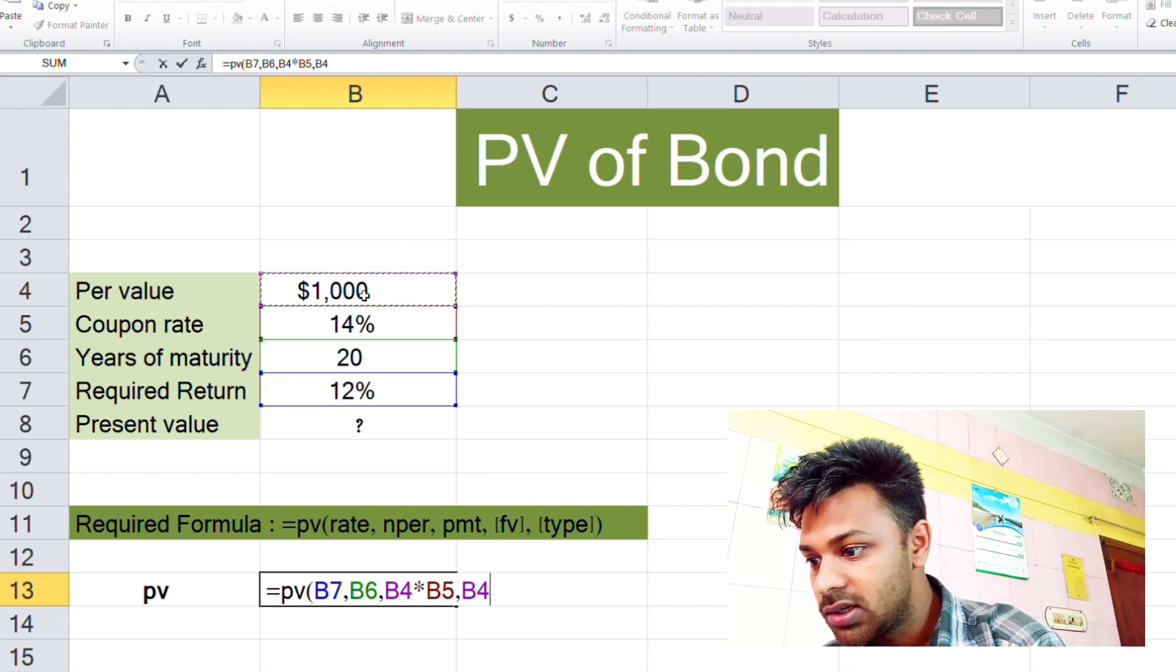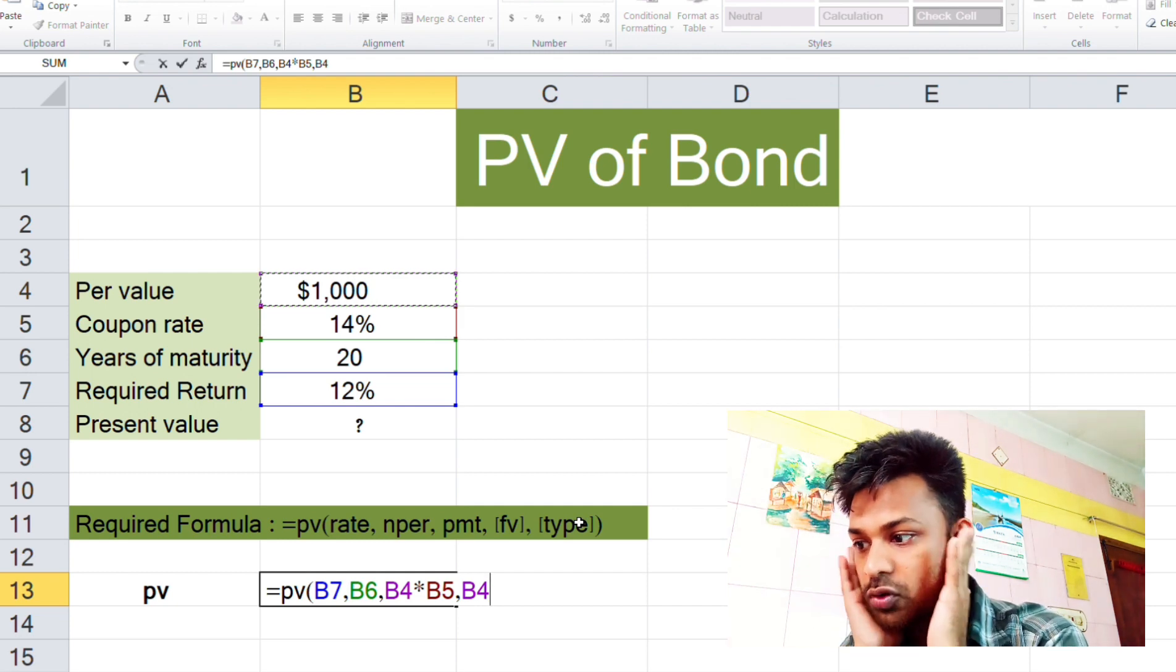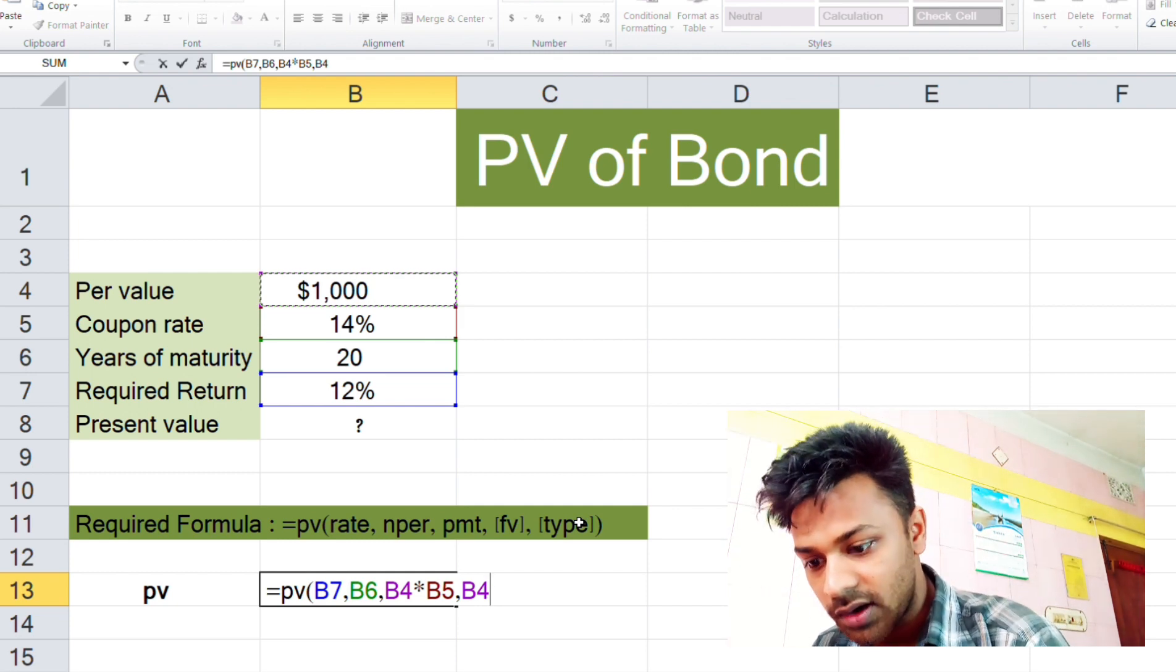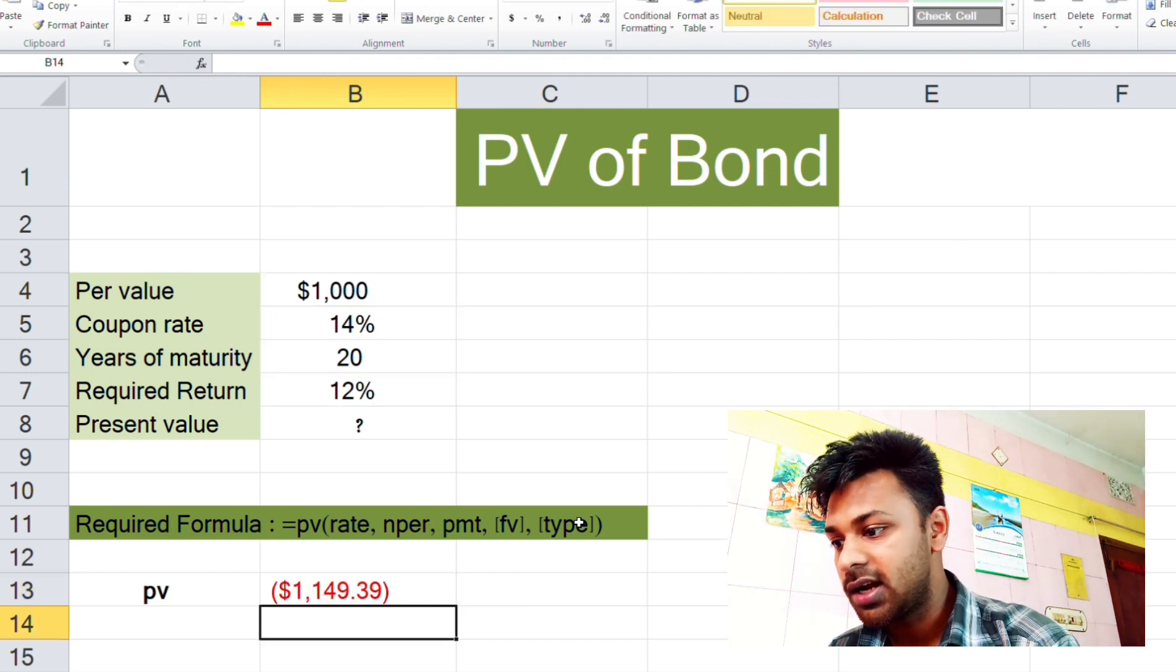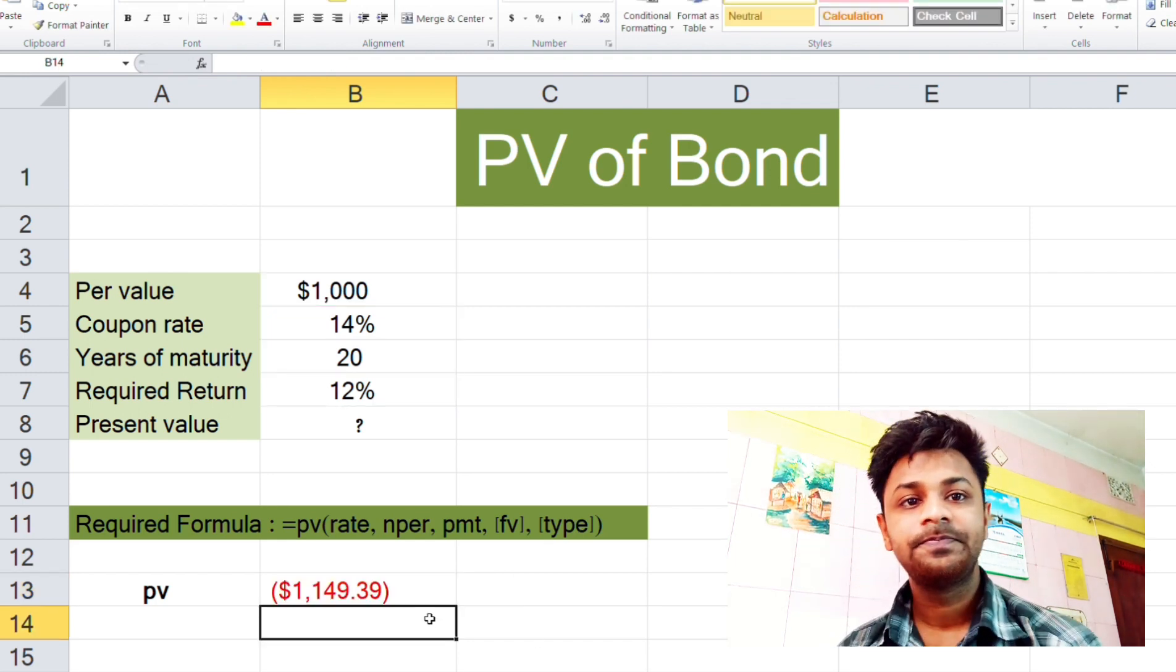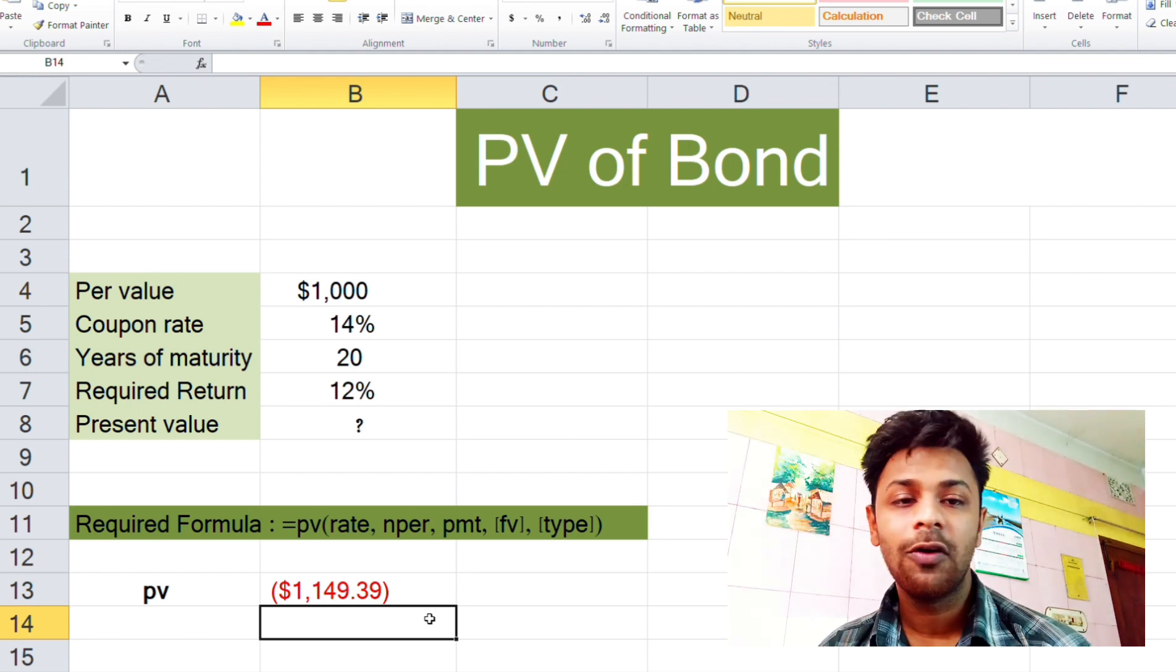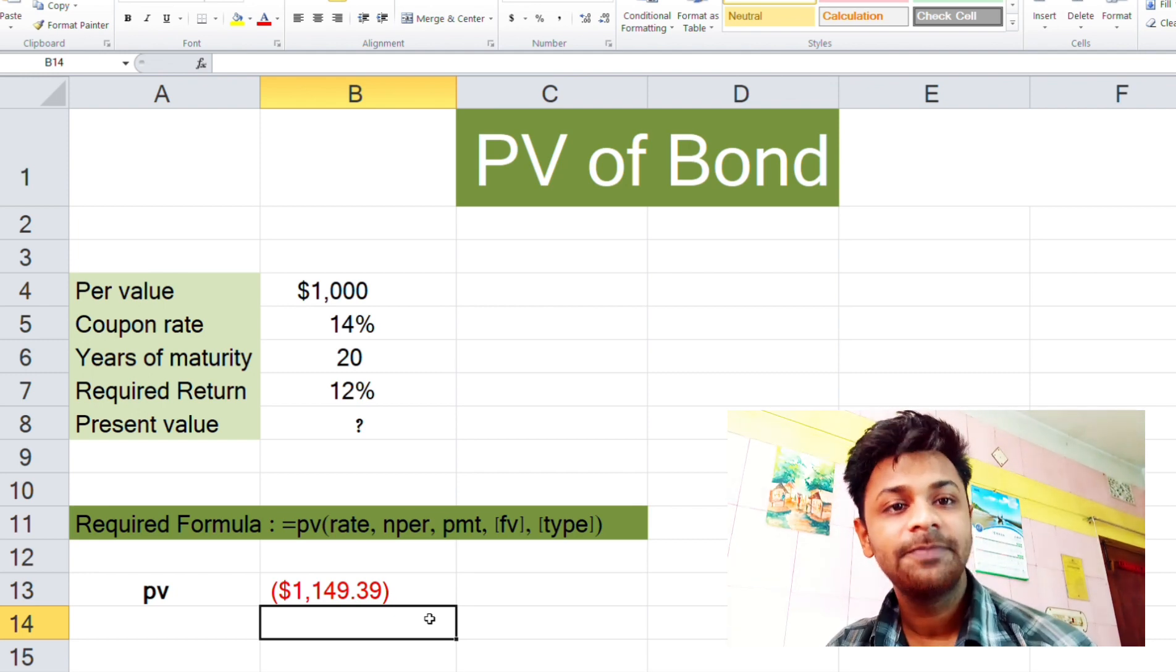And close the bracket, hit enter. Here is the PV, the present value of bond. Thank you for watching, see you on the next one.